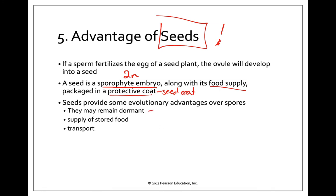Seeds have many advantages over spores. They can remain dormant for a really long period of time — the diploid sporophyte doesn't have to immediately find a place to land. It can land on the ground and stay dormant for weeks, months, or years. There is evidence that the longest dormant seed counted has been dormant for up to a thousand years and still germinated after that. They also have a built-in food storage supply, so when the seed finds a good environment it already has food to start with.